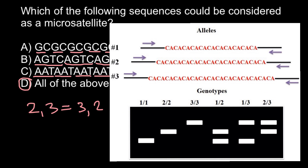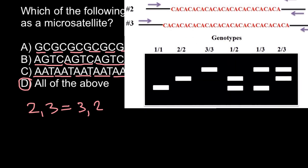If a sample from the crime scene and a sample taken from the suspect have the same genetic profile, we can say that this person has been at the crime scene. It would then be up to investigators to determine the role of this person in the crime.